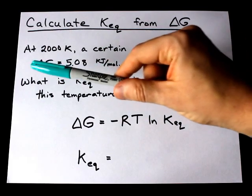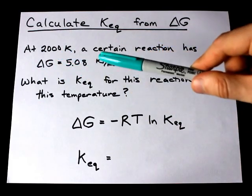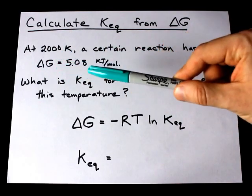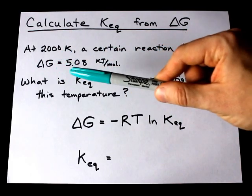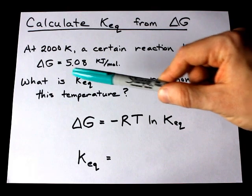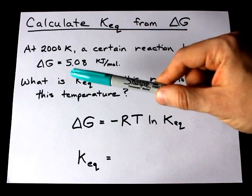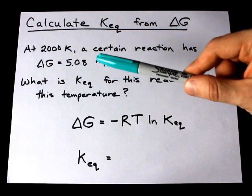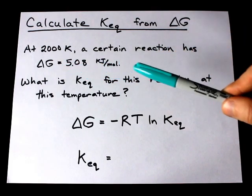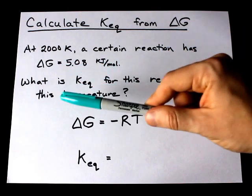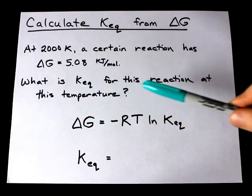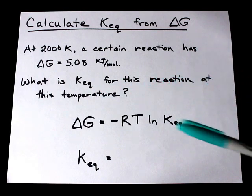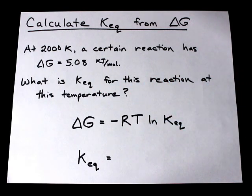At 2000 Kelvin a certain reaction has a delta G of positive 5.08 kilojoules per mole. What is KEQ for the reaction at this temperature?